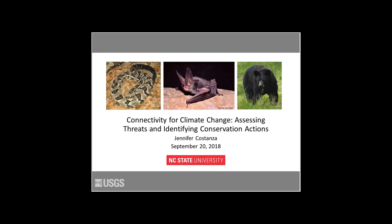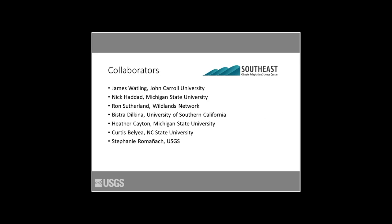Thanks for the introduction, Sean, and thanks to Elda and John for inviting me and getting this set up. Today I'm going to talk about some work we've done on connectivity in the Southeast, specifically with climate change in mind, and more specifically, thinking about once we have identified a connectivity network for species, what do we do? How do we figure out what to do for climate change with that network? But first I want to take a quick step back and thank my collaborators. This is part of a bigger multi-part project that's been funded in part by the Southeast Climate Adaptation Science Center, and it involves a number of collaborators at NC State and beyond.